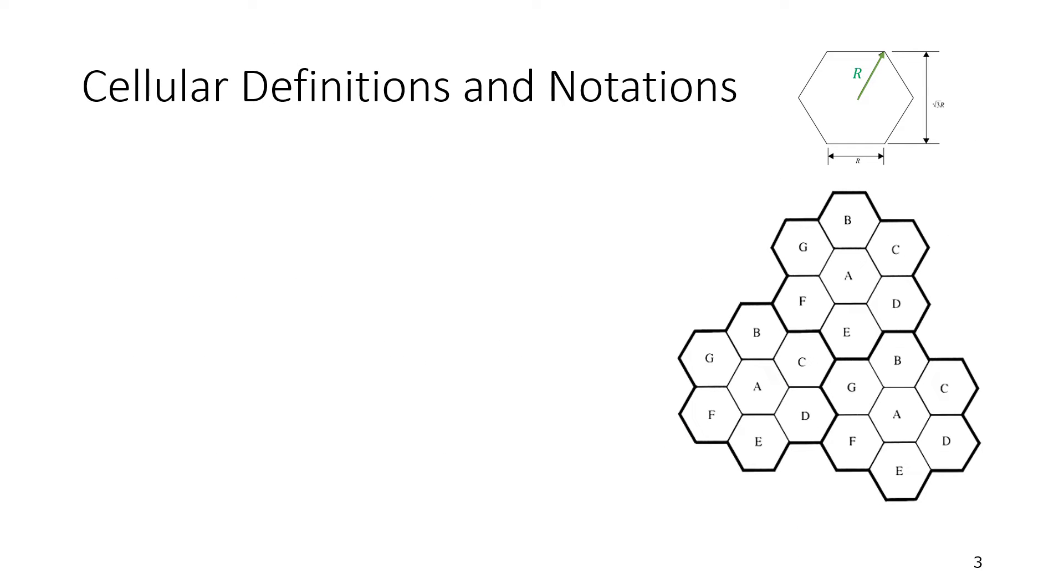So this is about where to locate the antennas in the base station. When it comes to the cellular definitions and some notations, we need now to focus because we'll get some variables. The first thing you need to know is the R, the radius of the cell. R from the center to the corner to the angle. It will equal also to the dimension of the side here segment. And from top edge to edge here we have square root of three R.